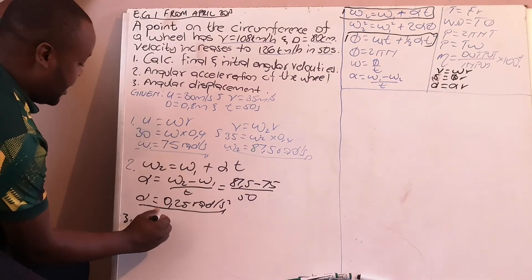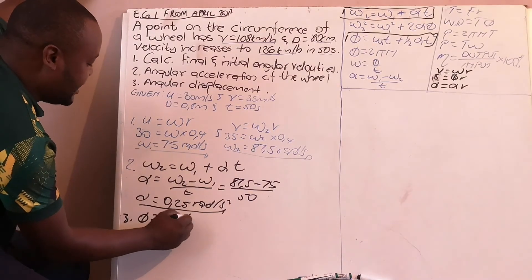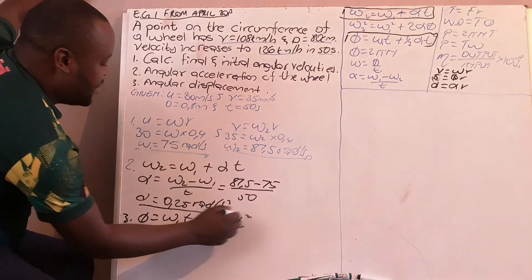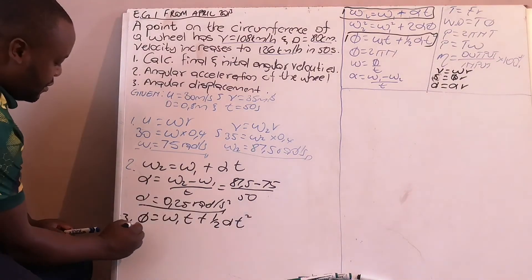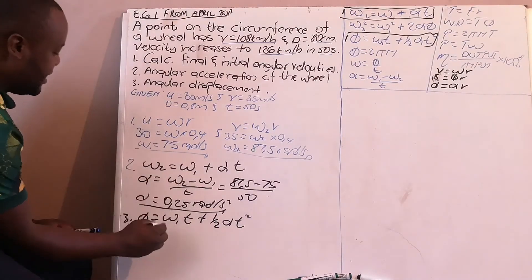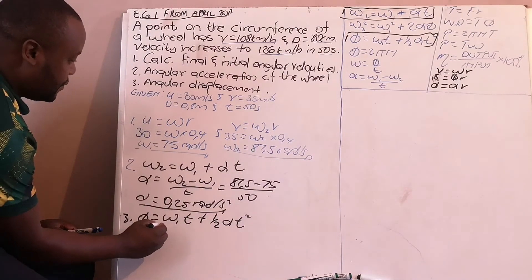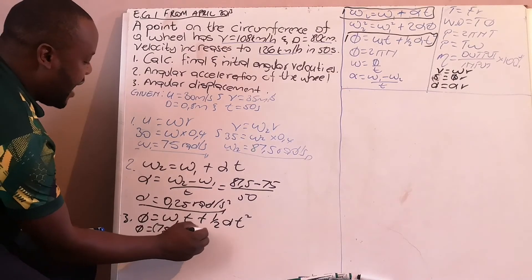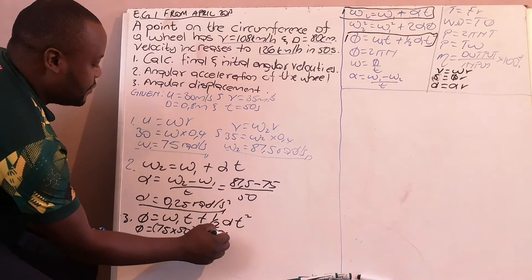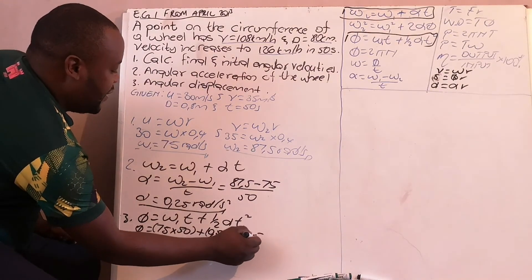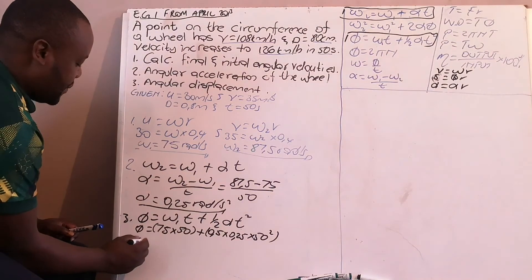For the angular displacement, we use the equation: angular displacement equals initial angular velocity times time plus half times angular acceleration times time squared. Substituting: initial angular velocity is 75, time is 50 seconds, plus half times 0.25, times 50 squared. This gives us our angular displacement.